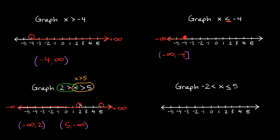Whenever you have a graph like this where it has two different parts — one that goes to the left, then a gap where there's nothing, then another graph that starts at 5 and goes all the way to the right — the way you fill that in is by putting a U, or union sign, between both of your interval notation answers. The union sign basically means 'or', so you could read this as: negative infinity to 2, or 5 to positive infinity — written as (-∞, 2) ∪ (5, ∞).